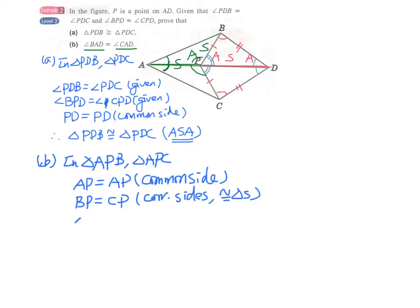And angle APB equals to 180 degrees minus angle BPD, adjacent angles on a straight line.